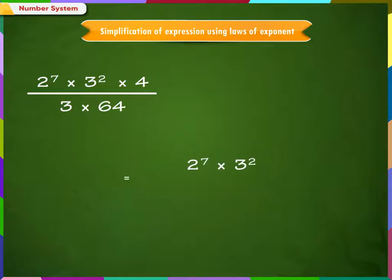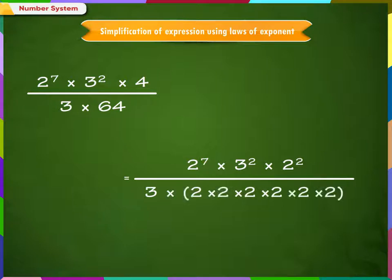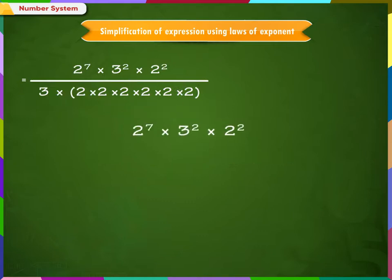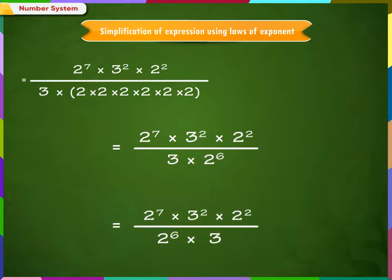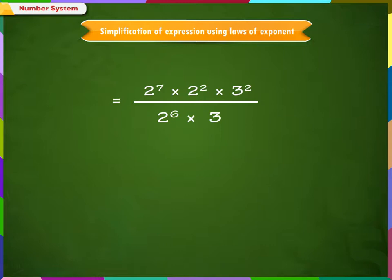Change the numbers into exponential form wherever possible. Like, 4 can be written as 2 squared and 64 can be written as 2 raised to 6. Arrange the numbers with same bases together. Using the first law of exponents, we know that in case of multiplication, if bases are same, then exponents are added. Therefore, 2 raised to 7 into 2 raised to 2 becomes 2 raised to 9.